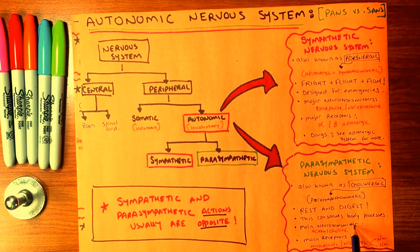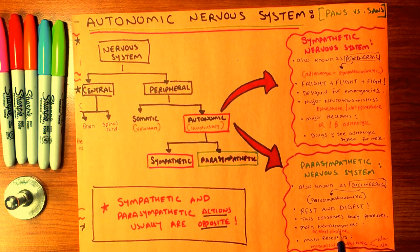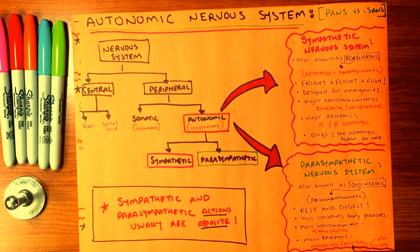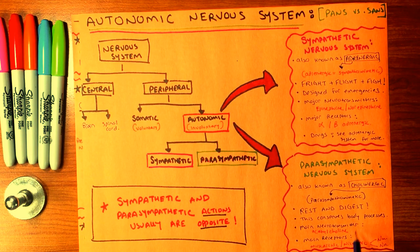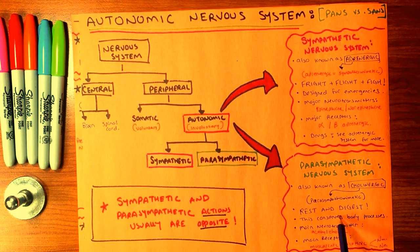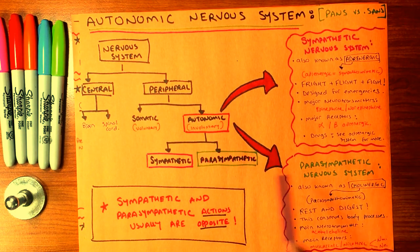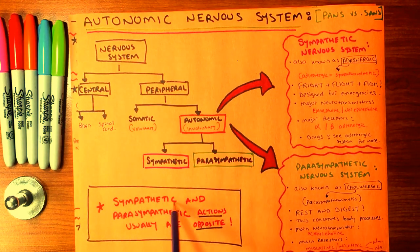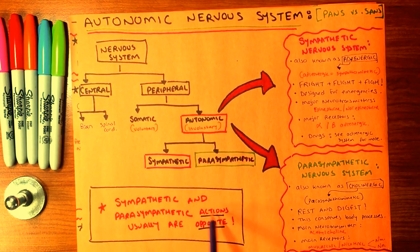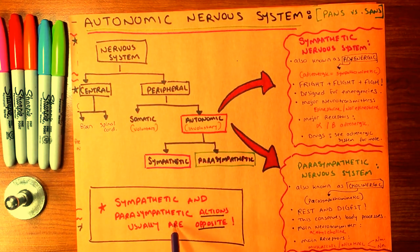The main neurotransmitter of the parasympathetic system is acetylcholine, and the main receptors are muscarinic and nicotinic receptors. Please refer to the cholinergic drugs for this system. It is important to note that sympathetic and parasympathetic actions are usually opposite.